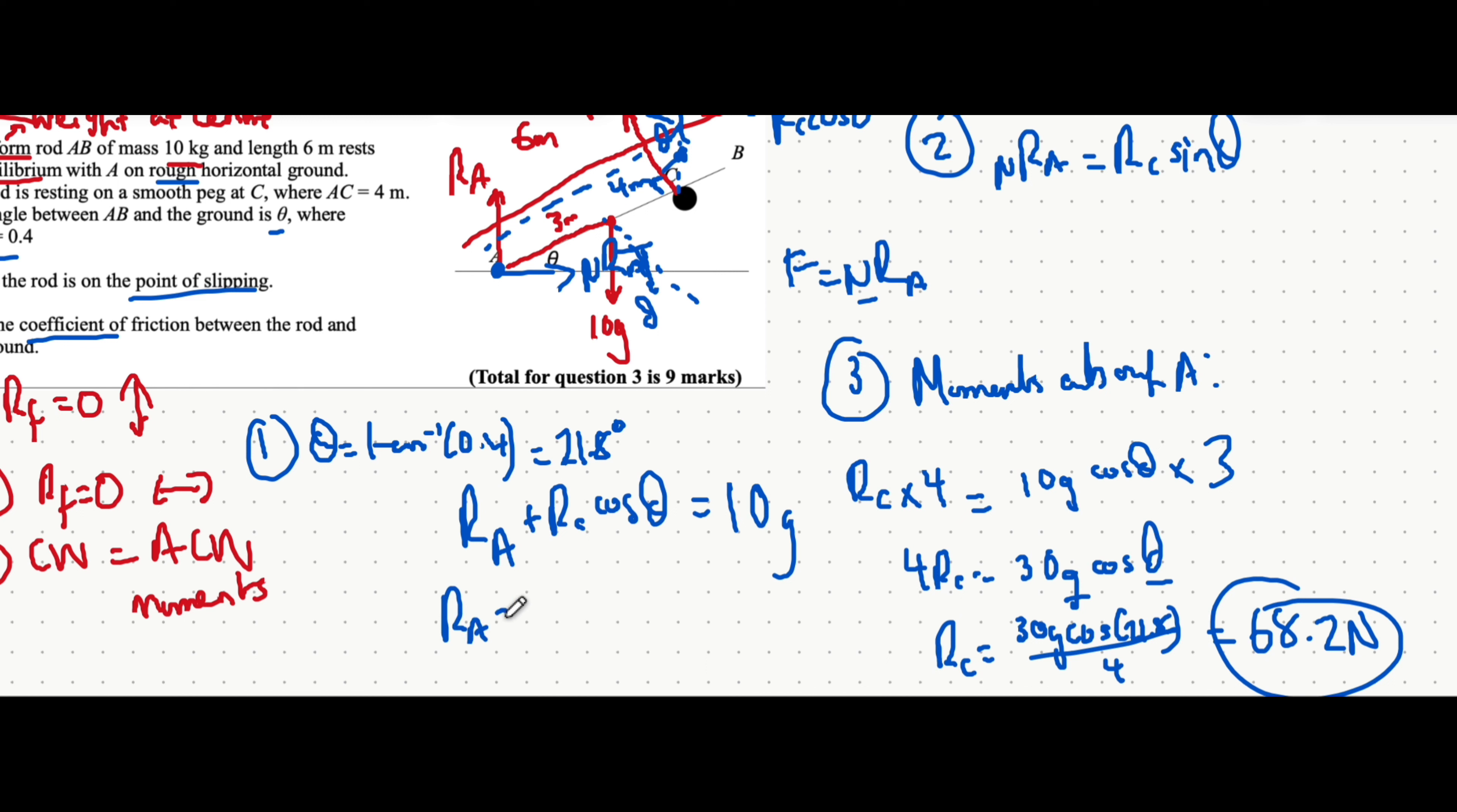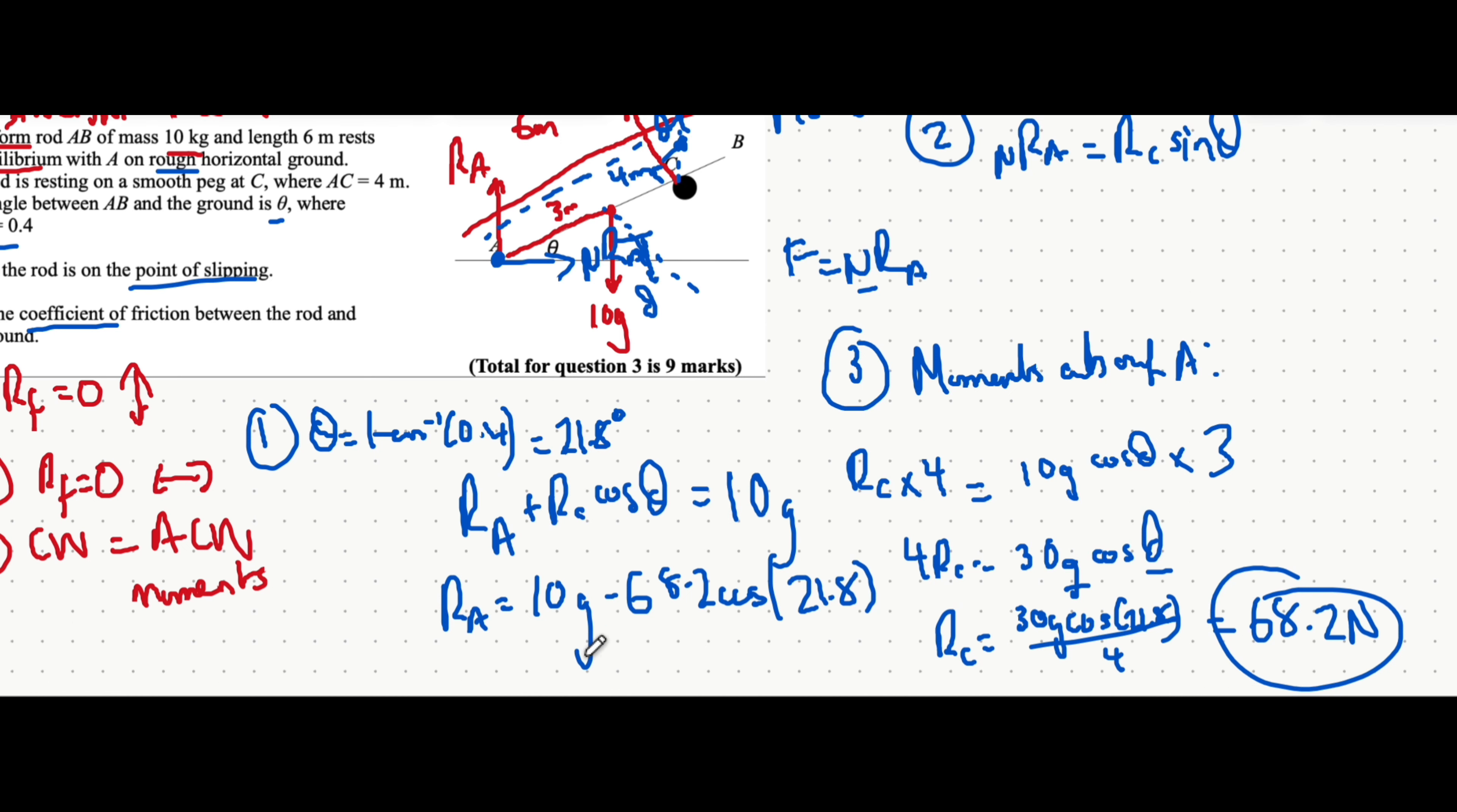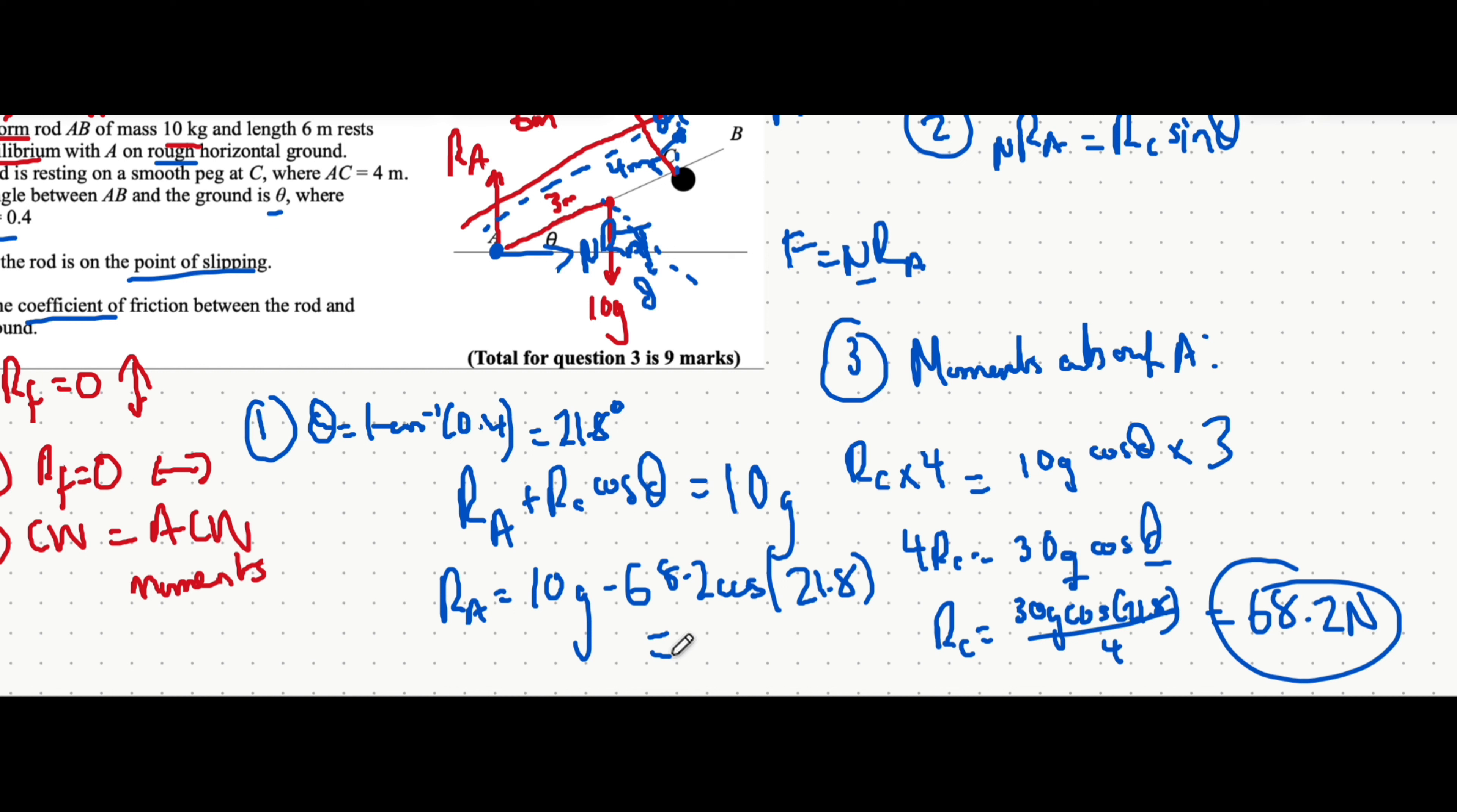You can say that the reaction force at A is 10 G take away R_C, which we just found, 68.2, multiplied by cos of the angle, 21.8. Putting all of that into the calculator. So we have 10 G, take away what we just found, cos of 21.8 is all equal to 34.6 newtons.